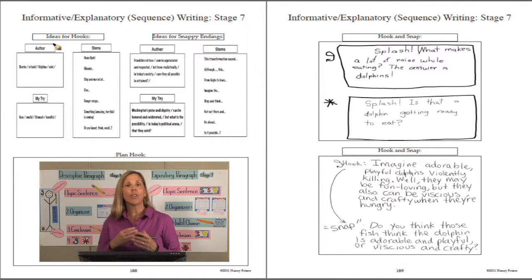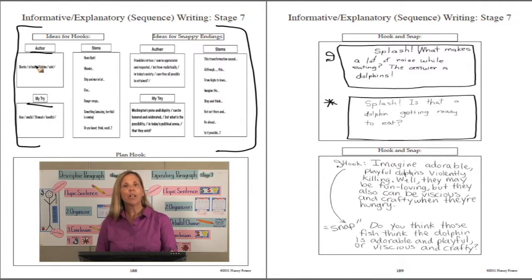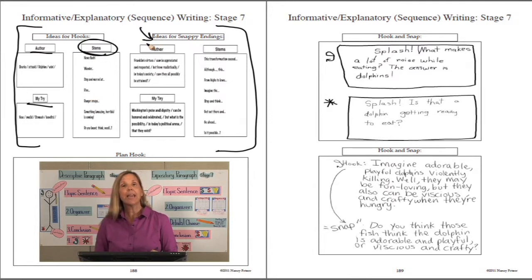The hook and snappy ending pages offer different ideas and ways to develop them. Sometimes we'll use something called Author My Try, where we take an author's hook from a published piece and use that style to create our own hook. Or we will have sentence stems—words that help us begin a hook. For the snappy ending, the same exact tools are used but to end the paragraph—an Author My Try or stem words.